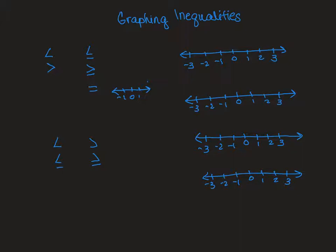Looking at the symbols on the left, if you look at greater than or less than, this would be an open circle. It can't be this number, but it can be numbers outside of this number. If you have less than or equal to, greater than or equal to, or equal to, it is a closed circle.